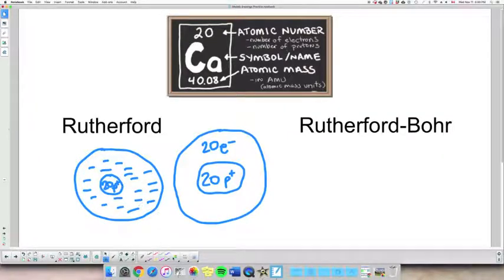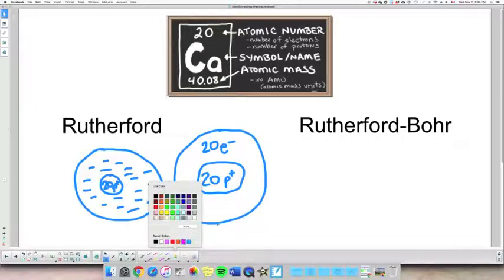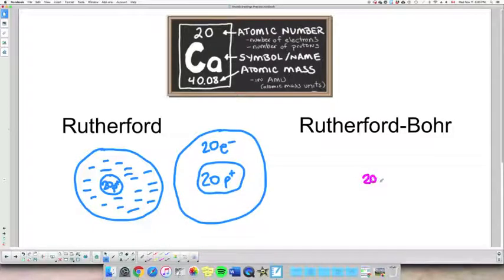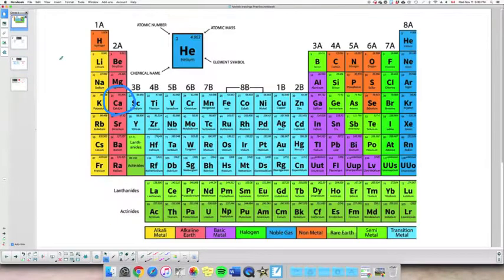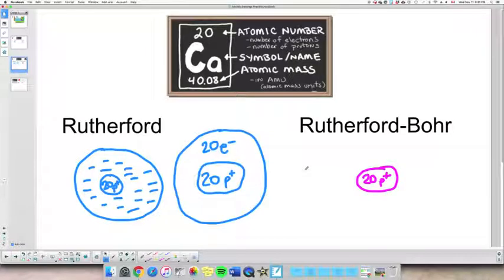Now if we draw the Rutherford-Bohr model, if you recall, Rutherford said that there has to be orbits in order to explain why these electrons are not falling or being attracted to the nucleus. So we have still the 20 protons in the nucleus, but now we need to draw the orbits. If I go back for a minute to the periodic table, calcium is in row number 1, 2, 3, 4, which means it has four energy levels or orbits or shells.